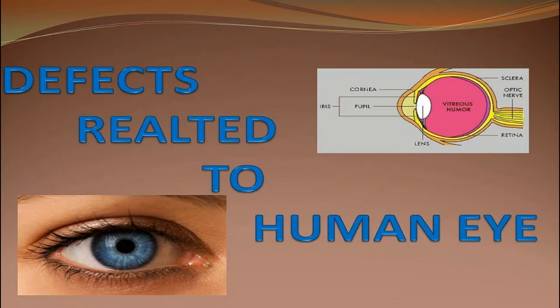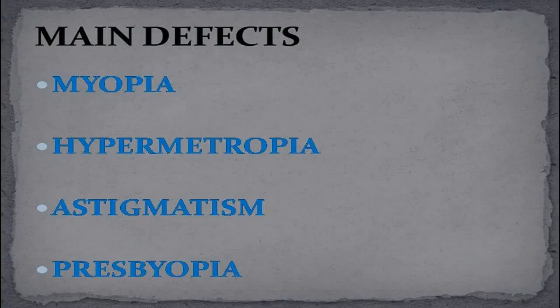The main defects associated with the human eye are myopia, hypermetropia, astigmatism, and presbyopia. Let's discuss the various defects one by one.